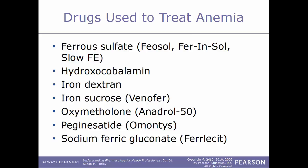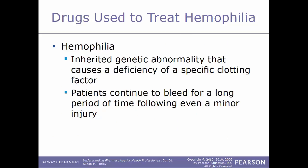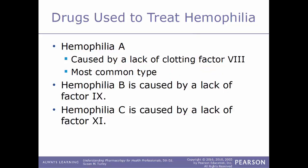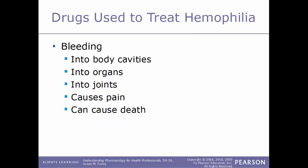Now we'll talk about drugs used to treat hemophilia. Hemophilia is an inherited genetic abnormality that causes a deficiency of a specific type of clotting factor, causing patients to bleed for a very long time following even minor injuries. There are various types of hemophilia depending on which clotting factor is affected. Hemophilia A is caused by a lack of clotting factor number 8 and is the most common type. Hemophilia B is caused by a lack of clotting factor number 9. Hemophilia C is caused by a lack of factor number 11.